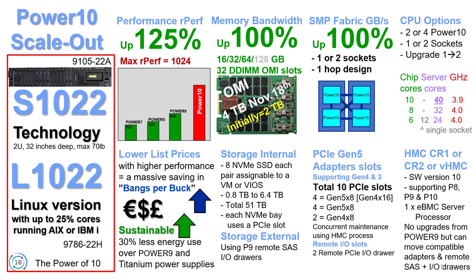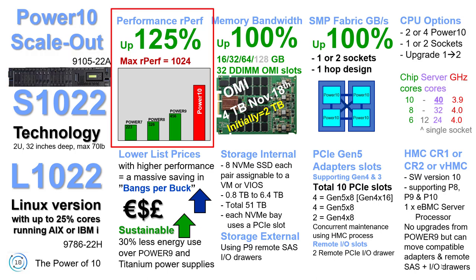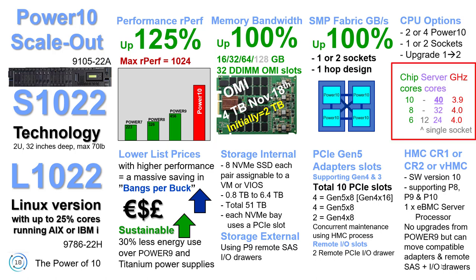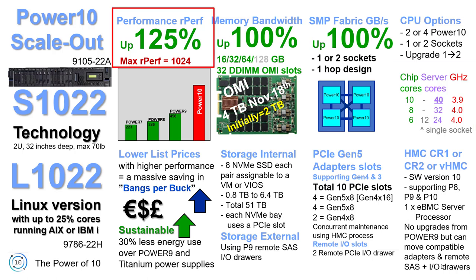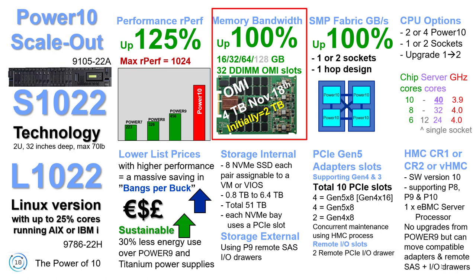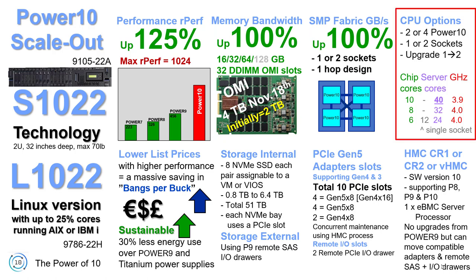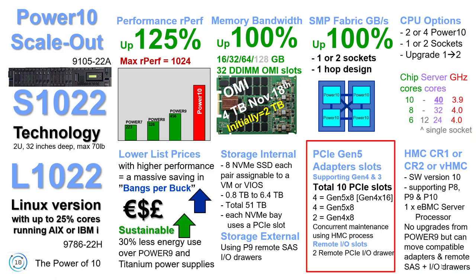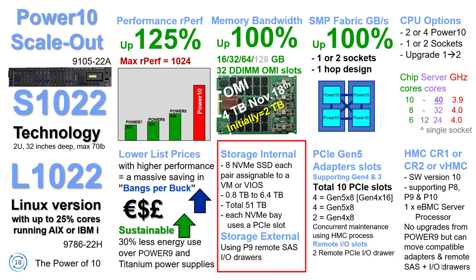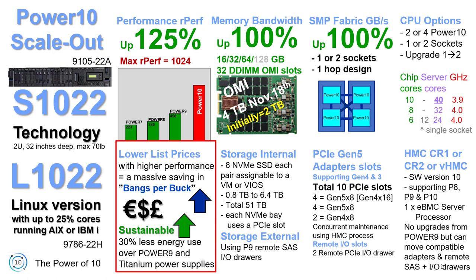Here's the S1022 and L1022 — again the L is the Linux version, though 25% of cores can run AIX or IBM i. Performance is down from the 4U machine primarily because we've only got 40 cores available and it's a 2U chassis — harder to remove heat. The relative performance is up 125% to an RPerf of 1024. It doesn't support the biggest OMI memory cards, so maximum memory is lower. We can still have one or two sockets, giving two or four Power 10 CPUs, with the same GHz ratings as the 4U machine. PCIe Gen 5 is the same. Internal storage has only 8 NVMe slots instead of 16. It still wins on lower list prices and higher sustainability with less electrical power use.